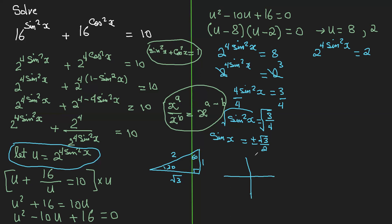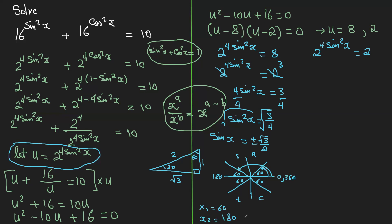Since the sine is plus or minus, we have an angle in every quadrant with reference angle 60. Measuring from 0, 180, and 360: x1 equals 60, and x2 equals 180 minus 60, which is 120, because you go all the way to 180 and subtract the reference angle.